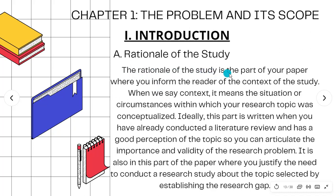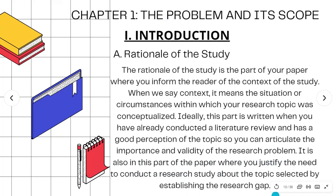The Rationale is the part of your paper where you inform the reader of the context of the study — the situation or circumstances within which your research topic was conceptualized. Ideally, this part is written when you have already conducted a literature review and have a good perception of the topic, so you can articulate the importance and validity of the research problem. It is also here where you justify the need to conduct the study by establishing the research gap.